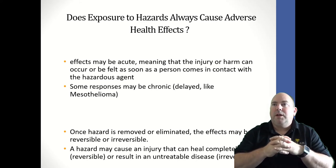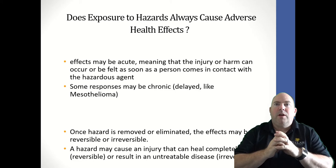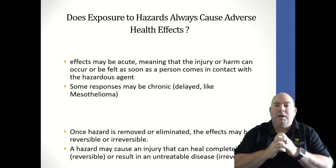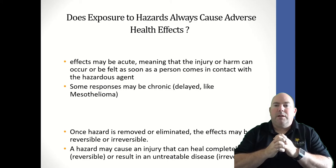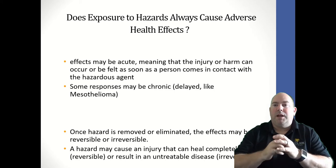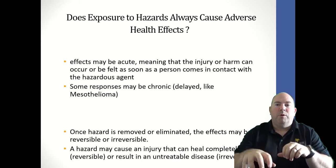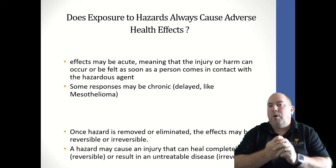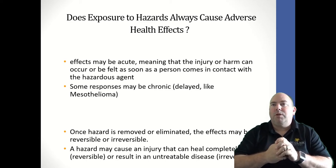Effects may be acute, meaning the injury or harm can be felt as soon as a person comes in contact with a hazardous agent, or it could be chronic, meaning it's delayed. An example: cutting your finger with a knife would be an acute injury — you're going to feel that right away. Something more chronic could be carpal tunnel syndrome. If you're using a mouse all day, every day at your job, your wrist might start to ache after a while. That's more of a chronic or delayed adverse health effect.